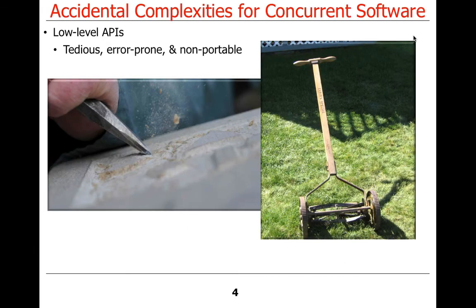We're going to start off by talking about so-called accidental complexities. Accidental complexities are things that arise due to self-inflicted wounds - things we bring on ourselves - usually by using the wrong types of tools, the wrong methods, the wrong techniques.